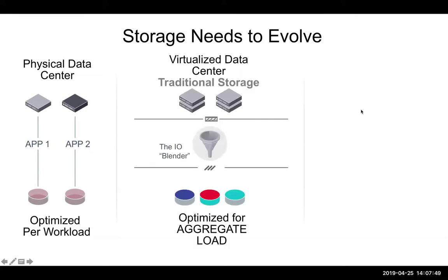As we move forward into virtualized environments, we have lots of servers, but back-end storage is now a pool, and it's gone from being optimized for a specific workload to being optimized for an aggregate load. What used to be one physical server is now a host that has 20, 30, 50, 100 virtual machines inside of it. Every one of those virtual machines is not getting its own storage custom-tuned and tailored for it like it did back in the physical data center days. We end up sharing this storage, and what we call the I/O Blender effect, where different-sized workloads from all the different virtual machines come in as a blur to the storage.